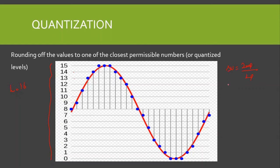The magnitude of each quantized level — that is, the step size between adjacent levels — is given as 2Mp divided by L, where Mp is the maximum amplitude of the message signal and minus Mp is the minimum amplitude. So this difference, which I'll denote as ΔV, is equal to 2Mp divided by L, where L is the number of quantized levels.